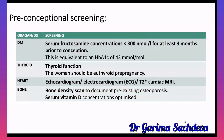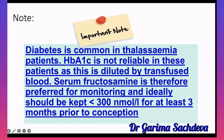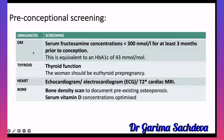For screening: since thalassemia affects the heart, liver, and endocrine system, you perform echocardiography and T2-weighted MRI for the heart, a ferriscan for the liver, and for endocrinopathies such as diabetes, you would normally check HbA1c levels.